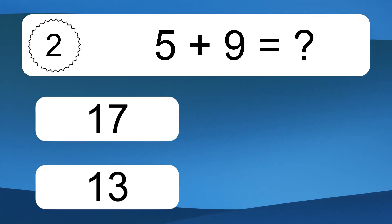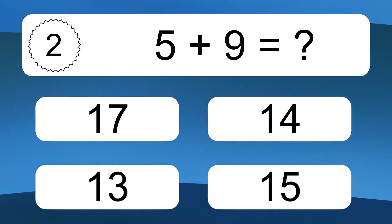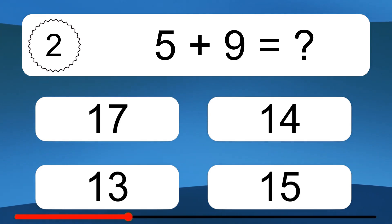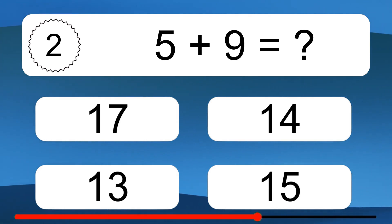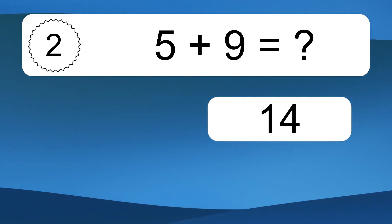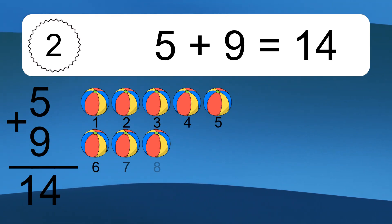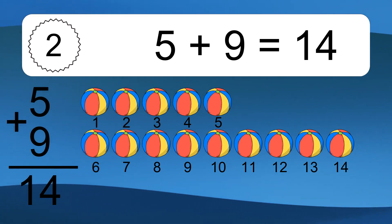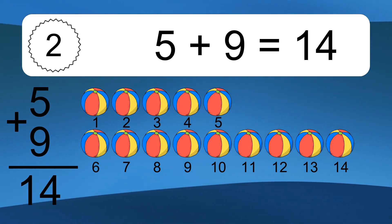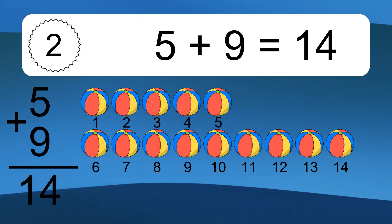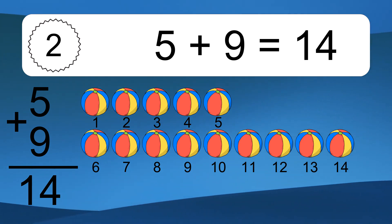5 plus 9 equals what? 5 plus 9 equals 14. Let's count it. 1, 2, 3, 4, 5, 6, 7, 8, 9, 10, 11, 12, 13, 14.